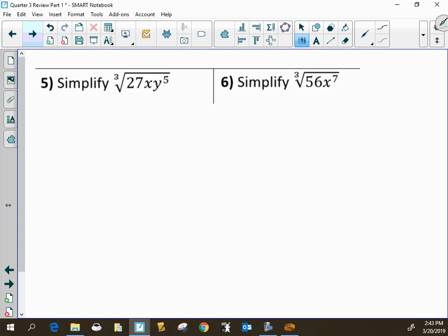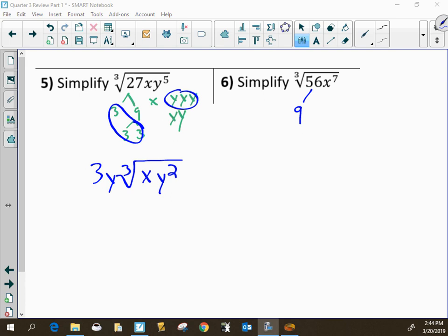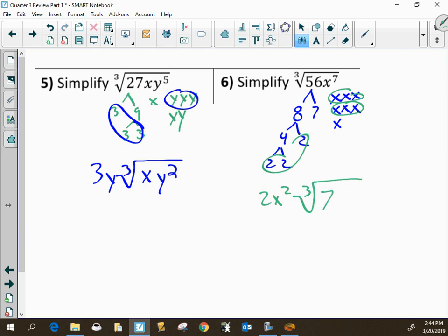So for number 5, same thing here. It's 3 and 9 and 3 and 3. So that'll be 3y times the cube root of xy squared. And this one is... Sorry, I had to pause. Someone was knocking on my door. So this is 8 and 7 and x's, 7x's. Sorry, let me finish out the 8. So that's 4 and 2 and 2 and 2. So you'll get 2x squared times the cube root of 7x.